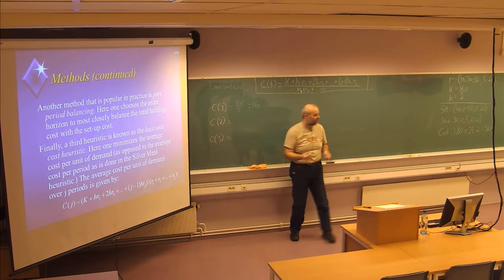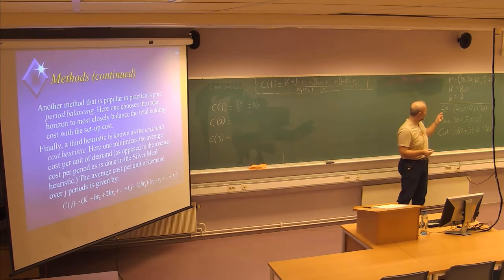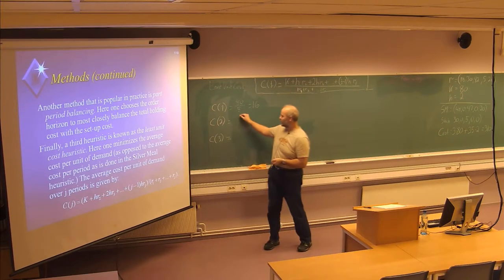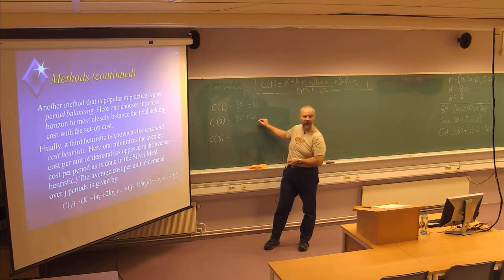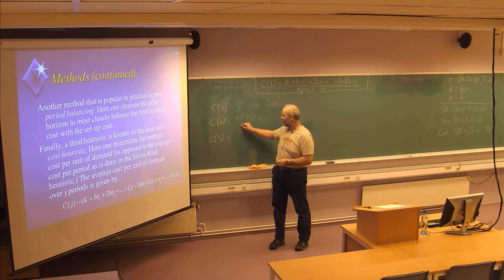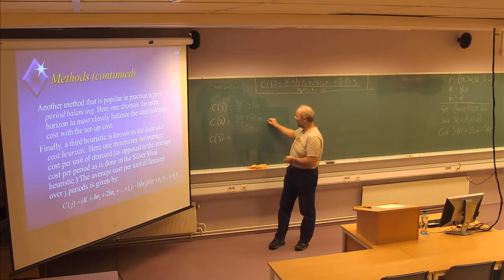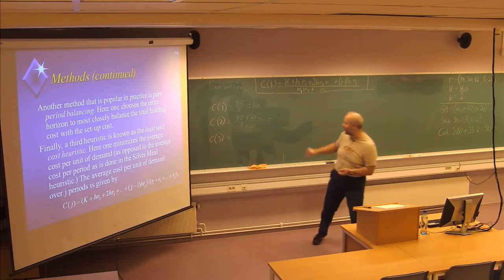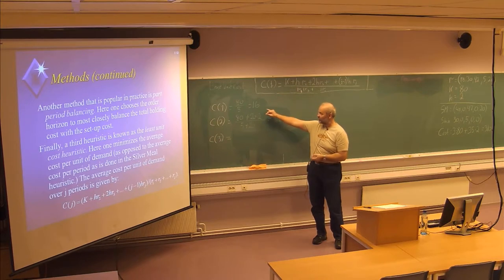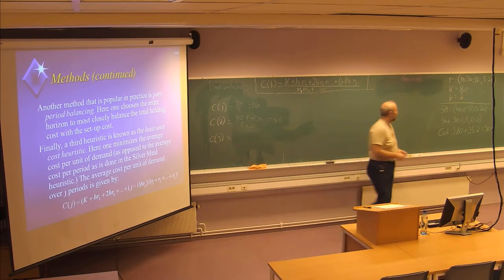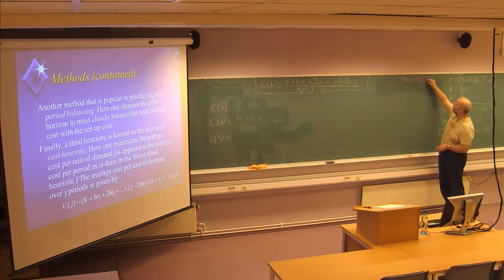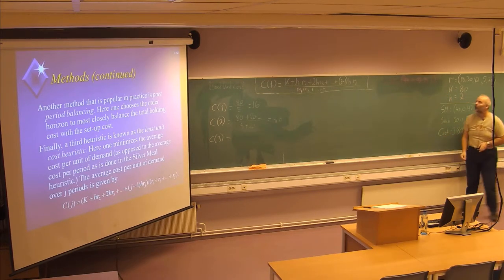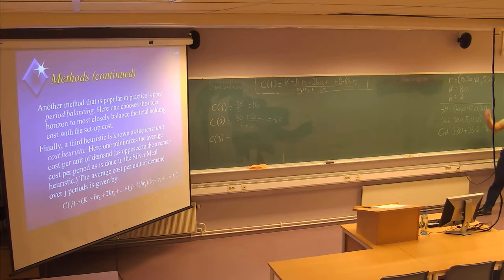And then if we also include period number five, we should produce 25 units. We still have a setup of 80 plus 20 units for one period at a cost of 2, divided by 5 plus 20. This will be 4.8, which is certainly much smaller than 16. So the conclusion here is to produce 5 plus 20 in period number four — 25 items — and nothing in period five.